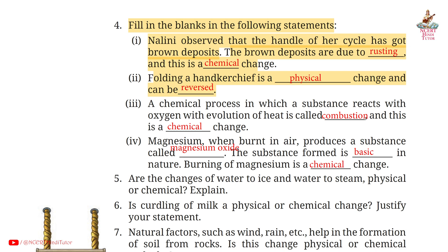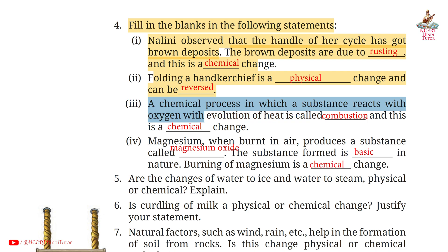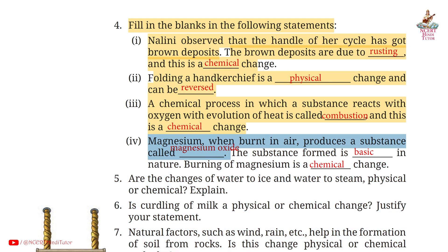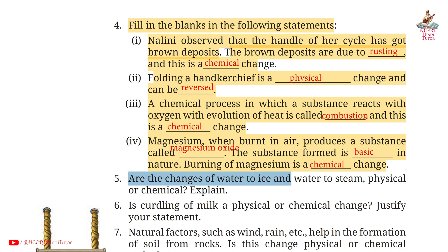3rd: a chemical process in which a substance reacts with oxygen with evolution of heat is called combustion, and this is a chemical change. 4th: magnesium when burnt in air produces a substance called magnesium oxide. The substance formed is basic in nature. Burning of magnesium is a chemical change.